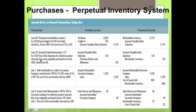On June 22nd, you received credit memorandum 110 for $150 from Holtz Industry for a defective product returned, originally purchased on invoice 5027 dated June 20th. Under the periodic system: debit accounts payable for Holtz Industries $150, credit purchase returns and allowances $150. Under the perpetual system: debit accounts payable $150 and credit merchandise inventory $150.